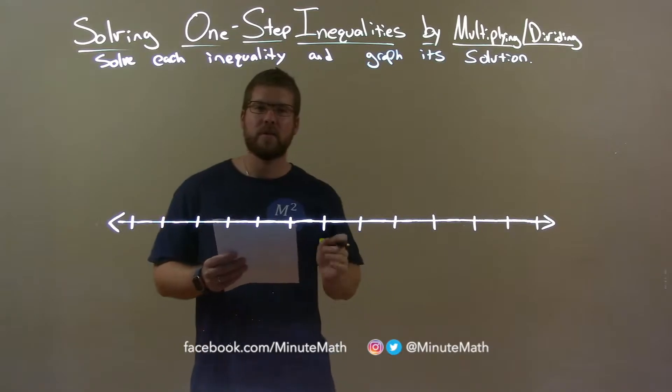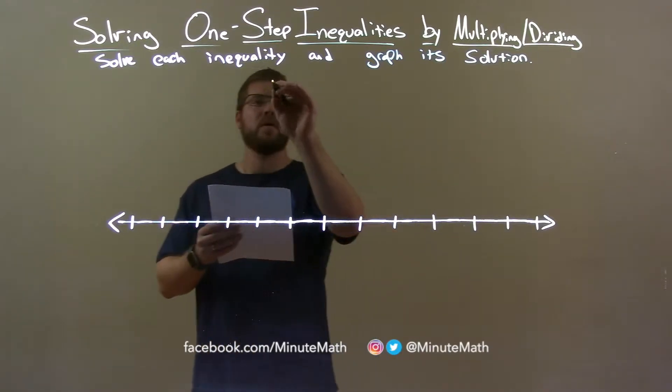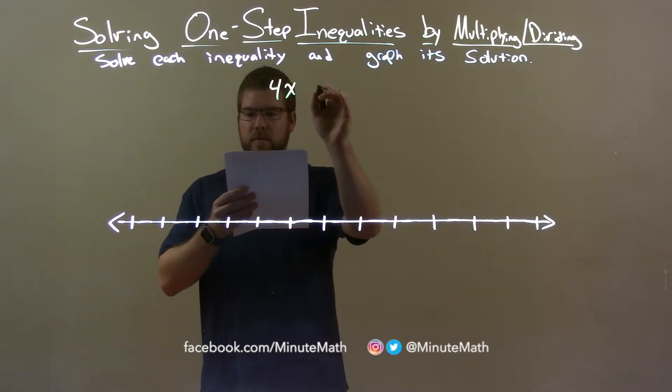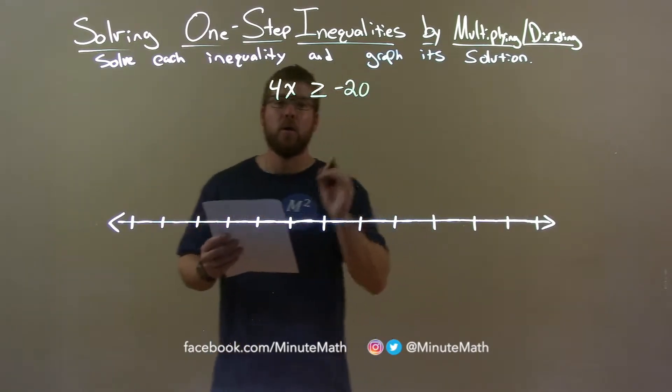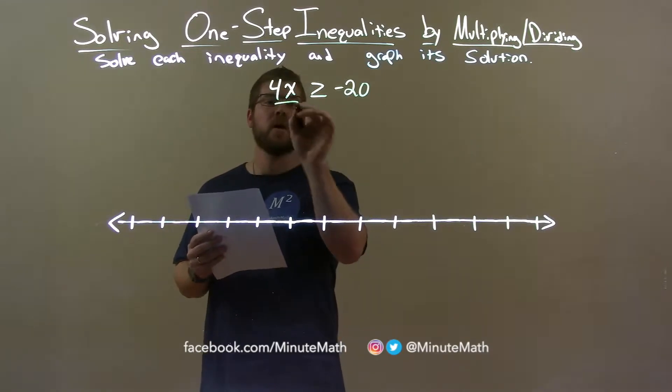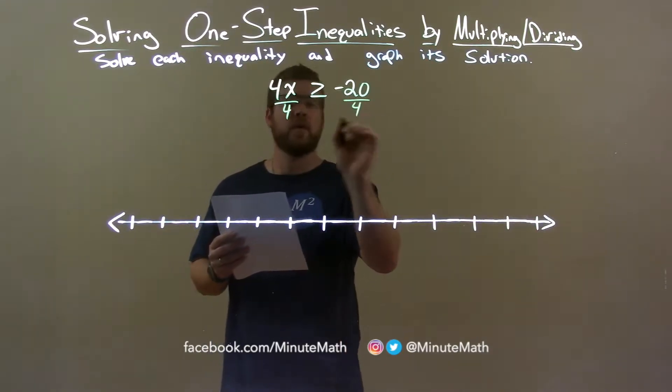Now, if I was given this inequality, 4x is greater than or equal to negative 20, well, first thing I want to do is divide both sides by 4. Divide both here, 4 here and 4 there,